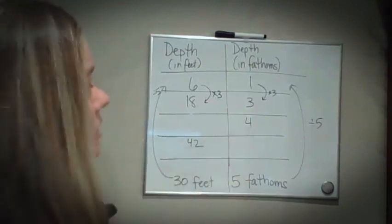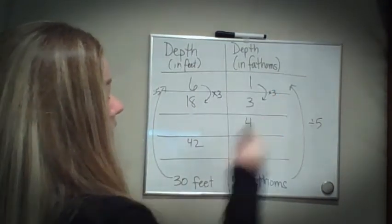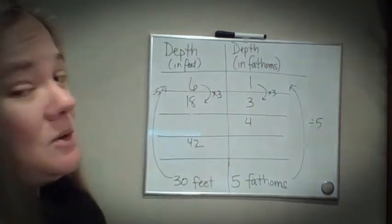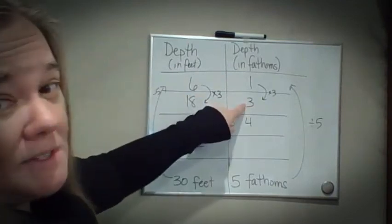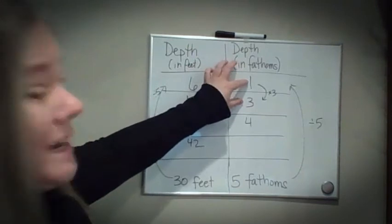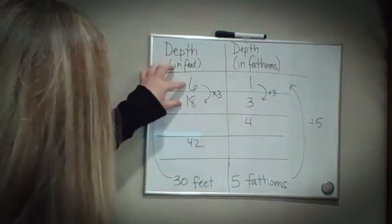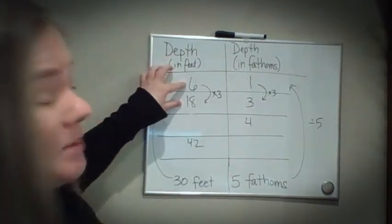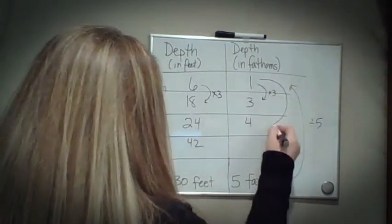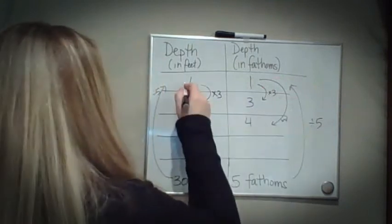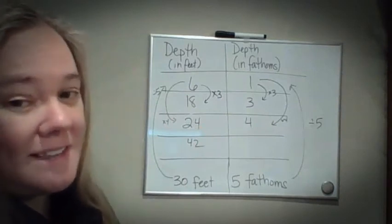Now to get to four fathoms — I could go all the way back up to one and do one times four is four, which would be fine. But I can also use what I know on my table. I know that one fathom is six feet and three fathoms is 18 feet. If I take one and three and add them together, one plus three is four. So I can add six and 18 together: 18 plus six is 24. Either way — multiplying one by four and six by four — we get the same answer.